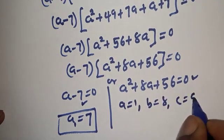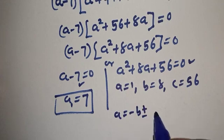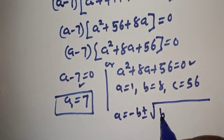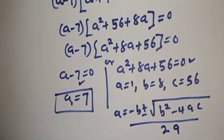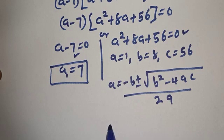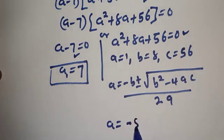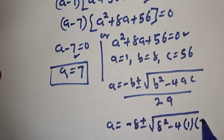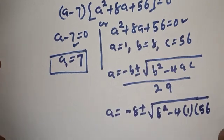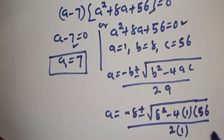From the second case, this is a quadratic equation. Let's solve using the quadratic formula: a equals 1, b equals 8, c equals 56. Then a equals minus b plus or minus square root of b squared minus 4ac over 2a. So a equals minus 8 plus or minus square root of 8 squared minus 4 times 1 times 56, over 2 times 1.